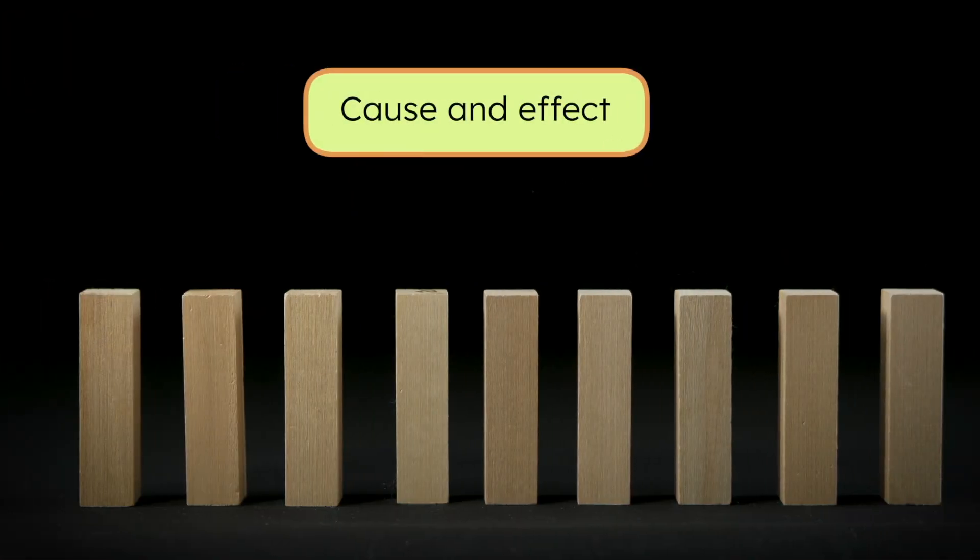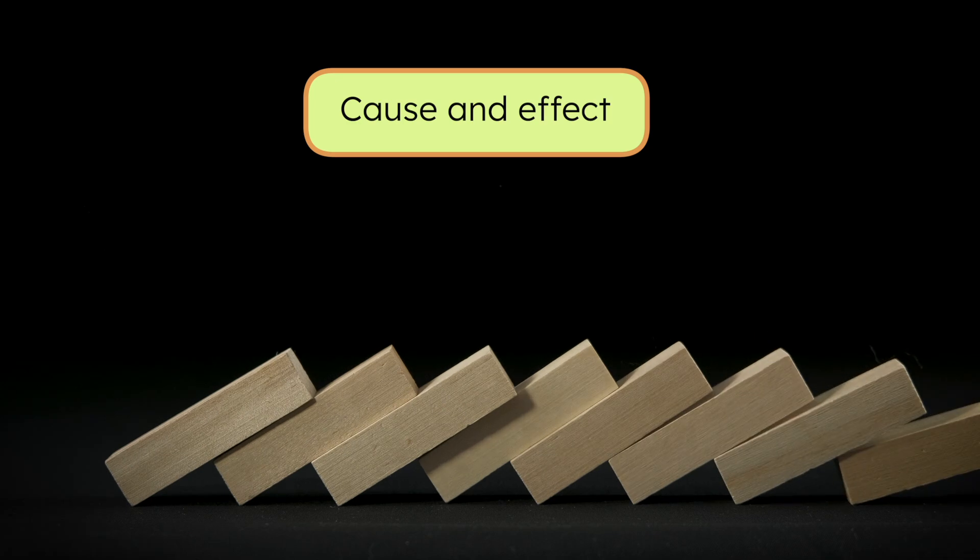Science is all about cause and effect. A cause is what makes something happen, and an effect is what we observe happening because of it. Scientists are always trying to figure out the cause of an effect. In our case of the missing puddle, we're questioning what caused a puddle that was there this morning to disappear. To figure it out, we need to make a hypothesis, or an educated guess, about why the puddle vanished.